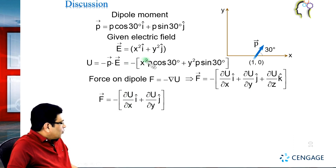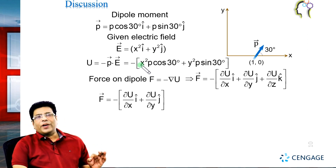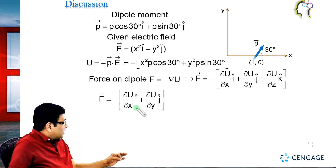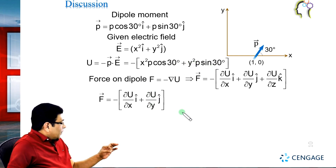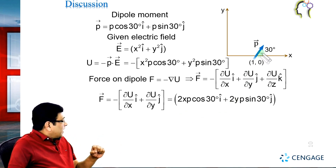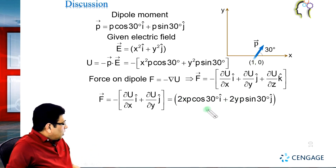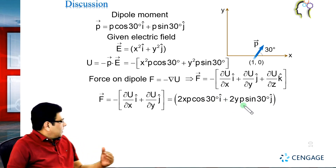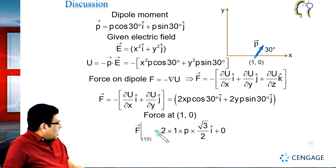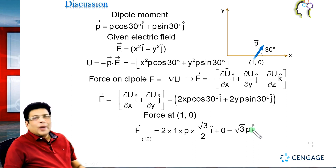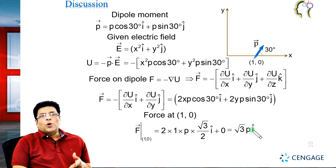We differentiate: ∂U/∂x = 2x × p cos30°, treating y as constant; and ∂U/∂y = 2y × p sin30°. Now substituting the coordinate (1, 0) — x = 1 and y = 0 — and the values cos30° = √3/2 and sin30° = 1/2: the y-term vanishes, and the force equals √3p î. This is the force on the dipole placed in the non-uniform electric field.